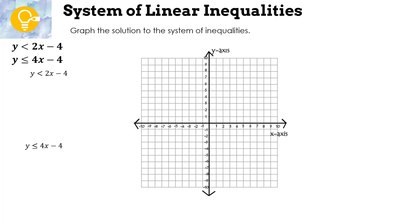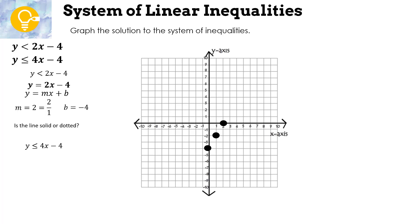Let's see how you did with the next practice. We have y < 2x − 4 and y ≤ 4x − 4. For the first: already in slope-intercept form, slope = 2 (written as 2/1), y-intercept = −4. Graph dot at −4, go up 2 over 1. It's a dotted line because of 'less than.'